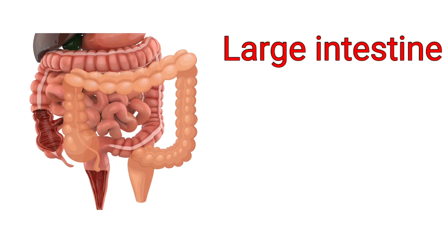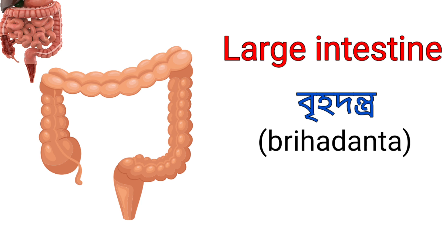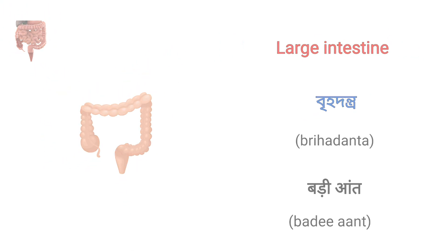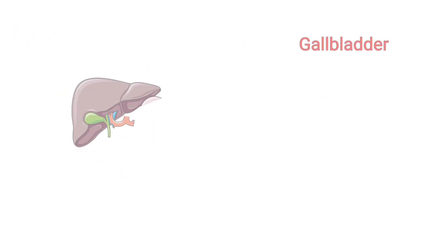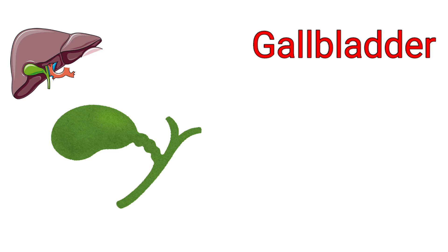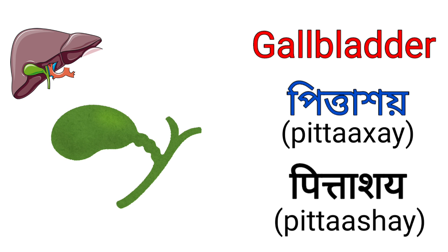Large intestine. It's called Brihadanto in Assamese and it's called Bari ant in Hindi. Gall bladder. It's called Pitta Khoi in Assamese and it's called Pitta Sae in Hindi.